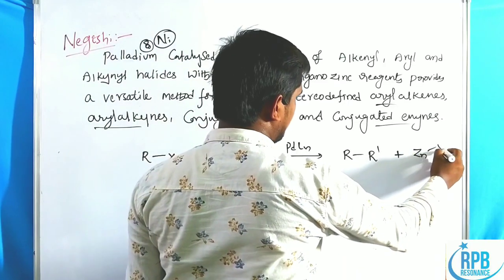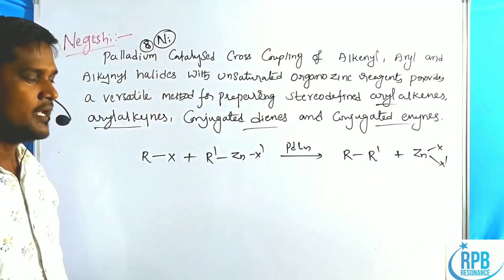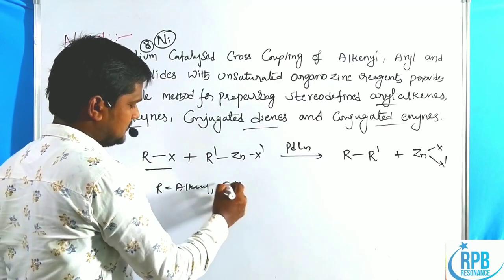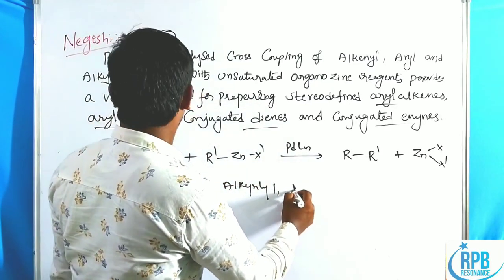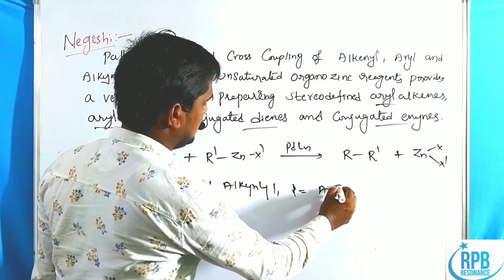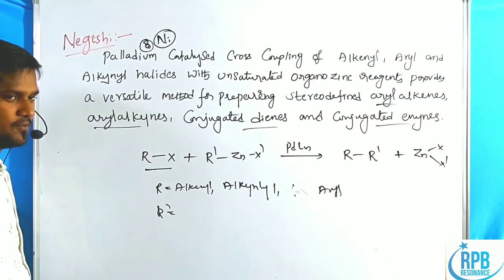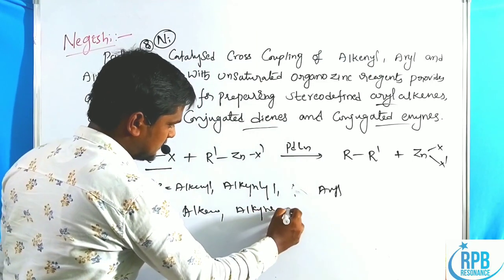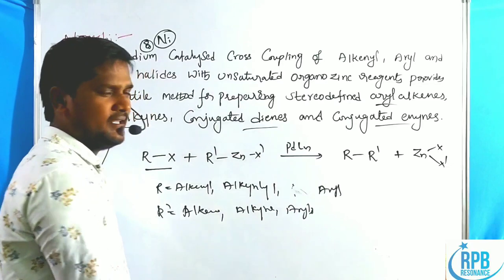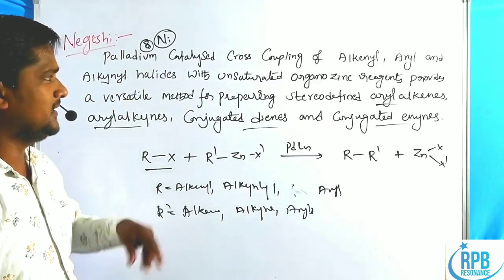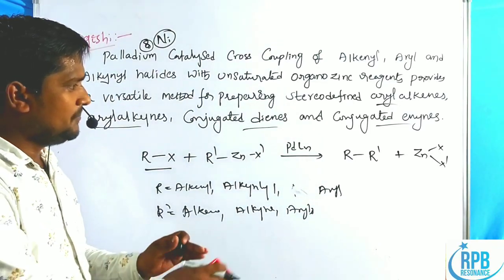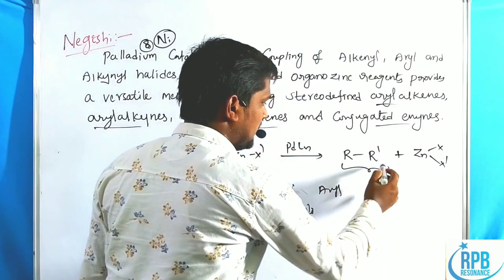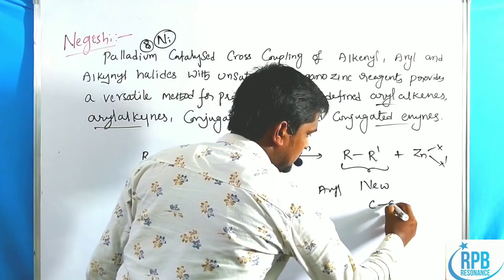Along with the elimination of ZnX and X, this gives R-R'. Here R can be an alkenyl group, alkynyl, or aryl. R' is equal to unsaturated compounds, which favors the Negishi coupling reaction. This is the basic introduction to the Negishi coupling — the best method to prepare R-R', that is, a new C-C single bond formation.